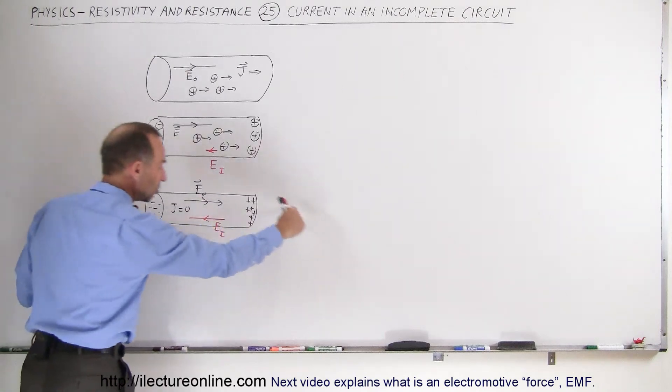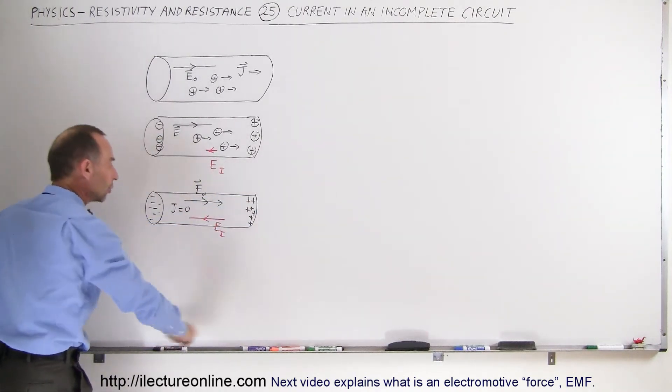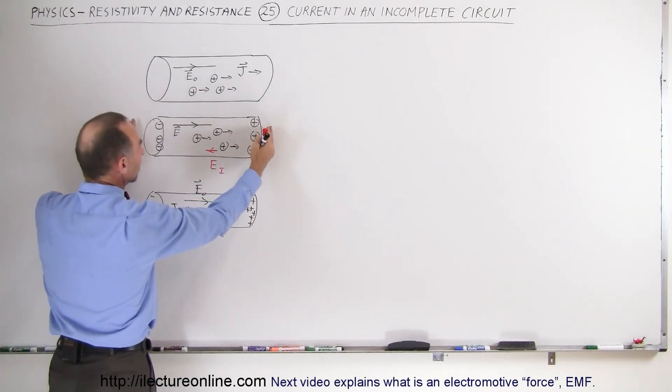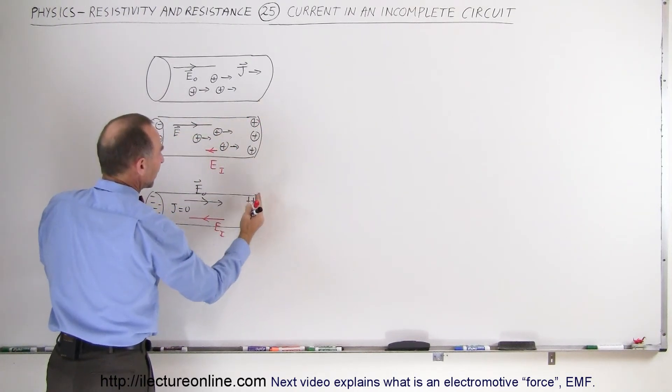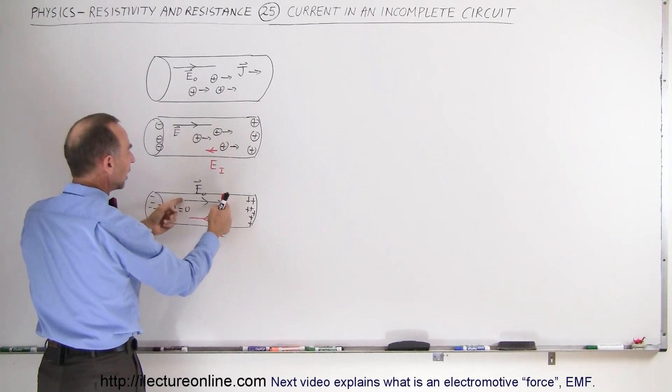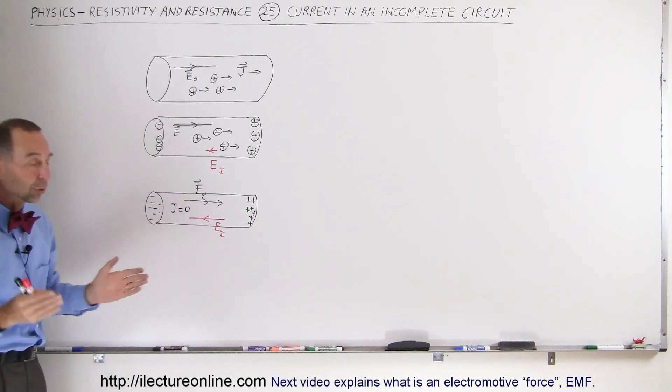Only if you have a continuous conductor all the way around can the current continue to flow with that electric field present. But if it's just an incomplete circuit like this, charges will build up at the end, it'll set up an electric field in the opposite direction, it will cancel out the electric field that caused the current in the first place and simply stop the current density.